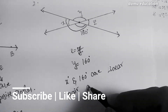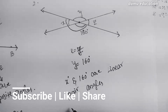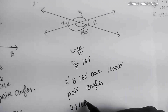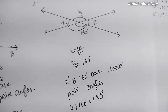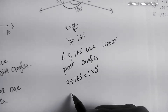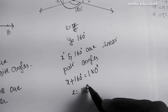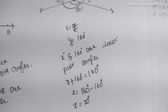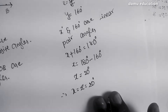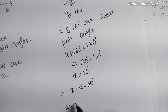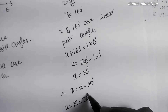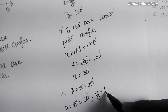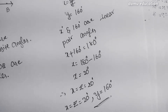Since X plus 160 equals 180 degrees, X equals 180 minus 160, so X equals 20 degrees. Since X equals Z, Z is also 20 degrees. Finally, X = Z = 20 degrees and Y = 160 degrees.